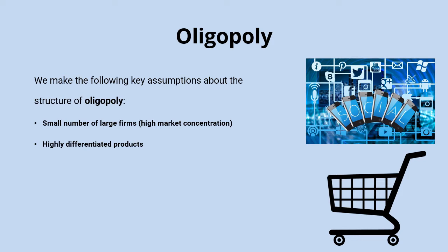It's very difficult in oligopoly for new firms to enter the market because of high barriers to entry and exit. This might include economies of scale — the cost-per-unit advantages that large incumbent firms have — and sunk costs, which are costs that can't be recovered if you leave the market, making the cost of failure really high and discouraging new entrants from taking the risk.